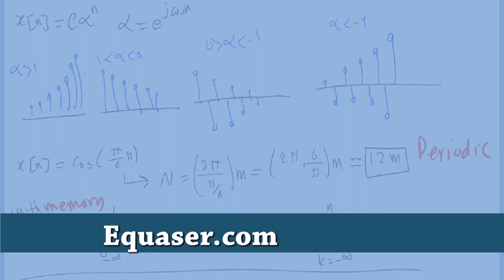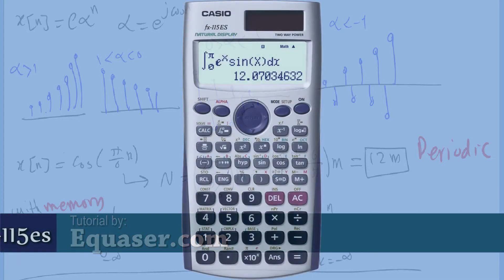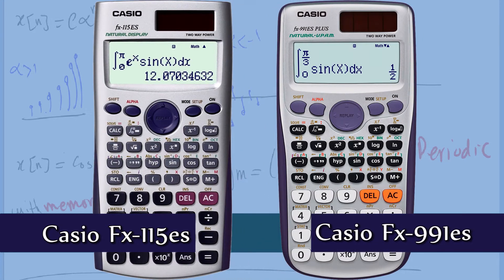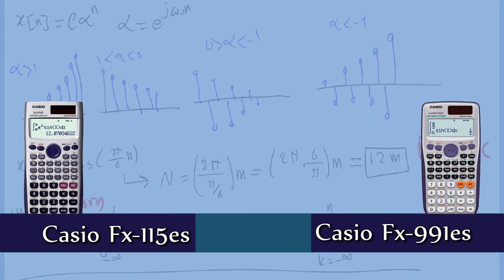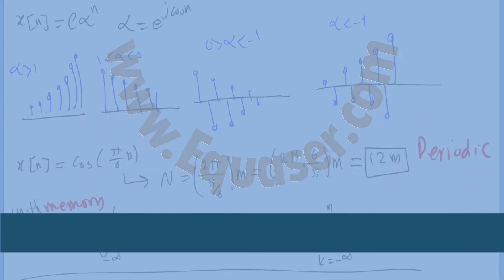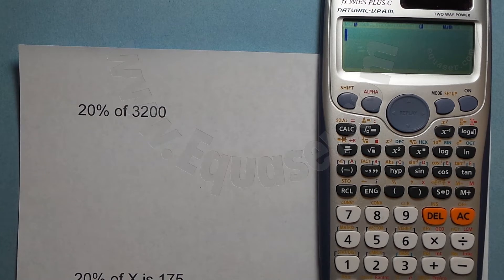Welcome to a tutorial from Equazor.com. This tutorial covers Casio scientific calculators FX-115ES and Casio FX-991ES Plus C. In this tutorial, we are going to use this Casio calculator to find percent values.